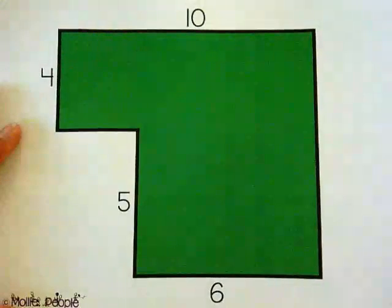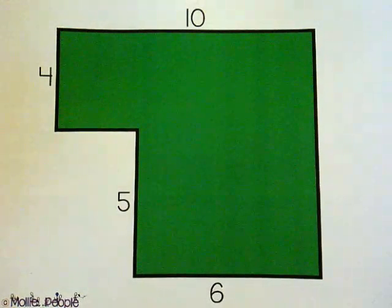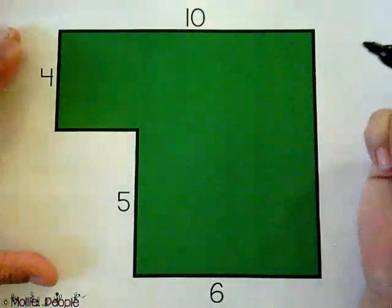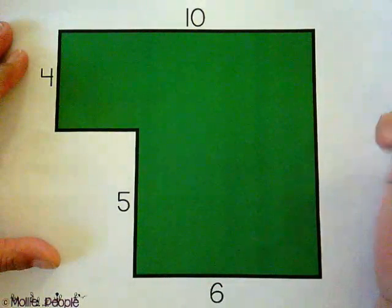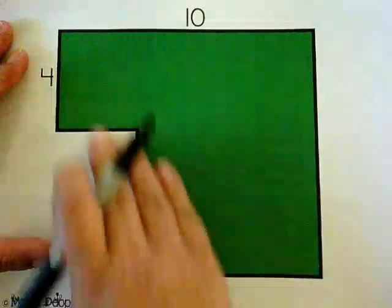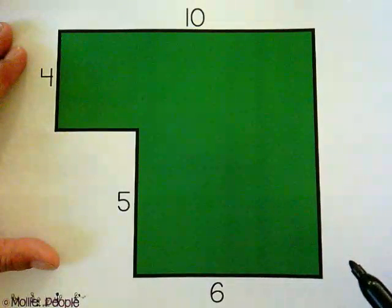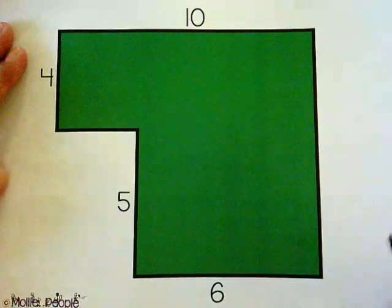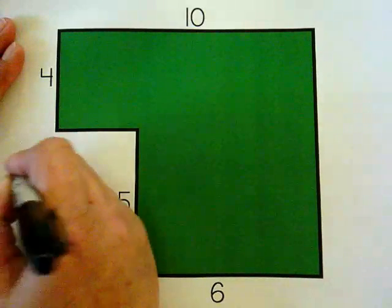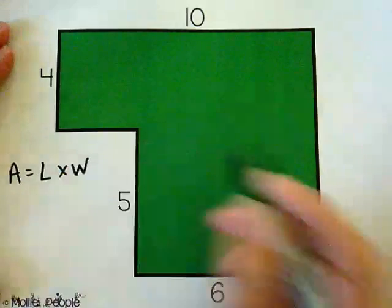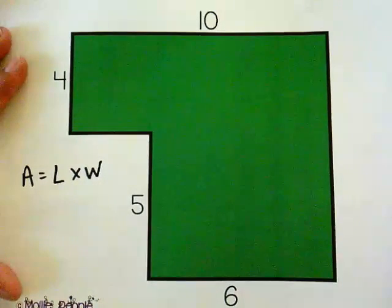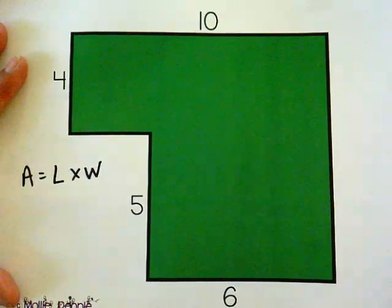If you have a shape that looks like this and the question says find the area or what is the area of the shape, well we're going to need to figure out the area. So the best way to do that is say okay, how can I split this into rectangles? Because I know how to find the area of a rectangle. That would be area equals length times width of a rectangle. So I can do that. I know that formula.